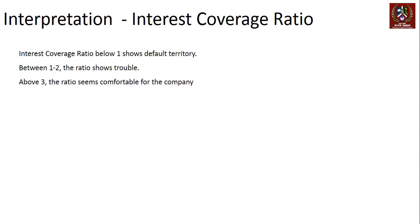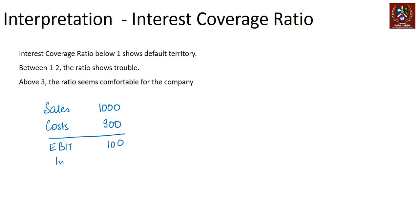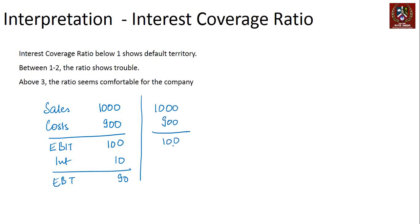Now let's interpret the Interest Coverage Ratio. Consider a company with sales of 1000, all costs of 900, giving an EBIT of 100. Company A has an interest component of 10, leaving EBT of 90. Company B has the same figures but an interest component of 80, leaving EBT of only 20. Now let's see what happens when sales dip by 3%.